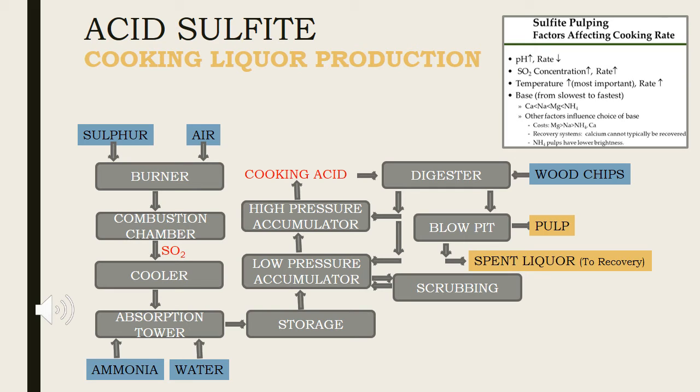Ammonium and calcium are economical basis. Recovery system: calcium cannot typically be recovered. Product brightness: ammonium pulp have lowest brightness.